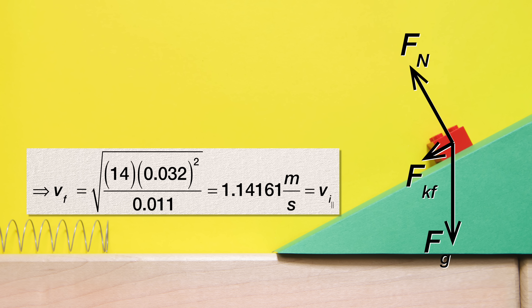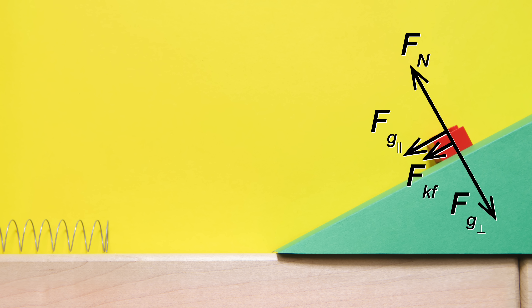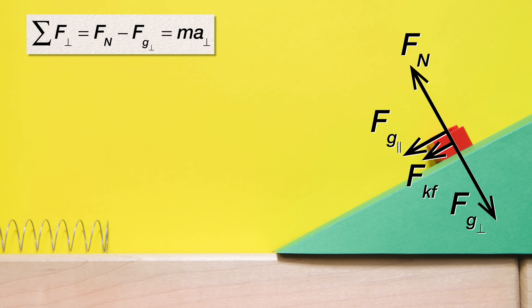Now we can break the force of gravity up into its components: the force of gravity parallel to and down the incline, and the force of gravity perpendicular to the incline and down. Now we need to sum the forces in the perpendicular direction. The net force in the perpendicular direction equals the force normal minus the force of gravity perpendicular, and it also equals mass times acceleration in the perpendicular direction.